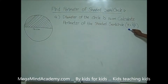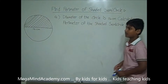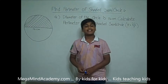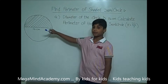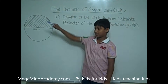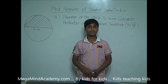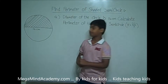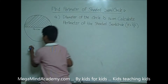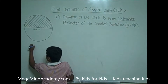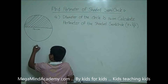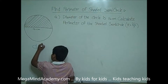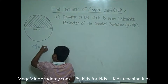Note that pi is equal to 22 over 7. It states in the diagram that the diameter is equal to 14 centimeters. Let's write that down. D for diameter is equal to 14 centimeters.